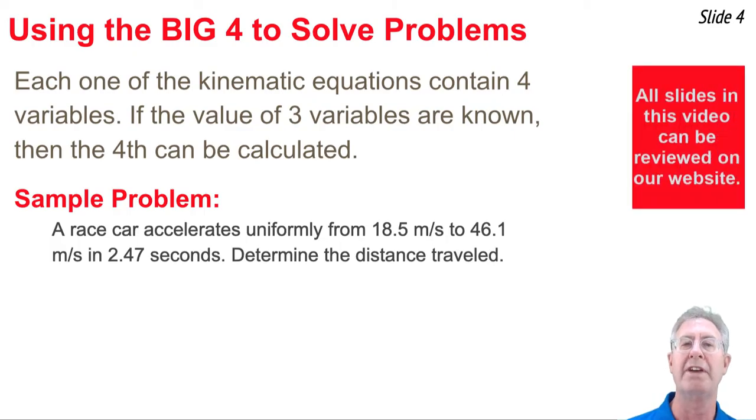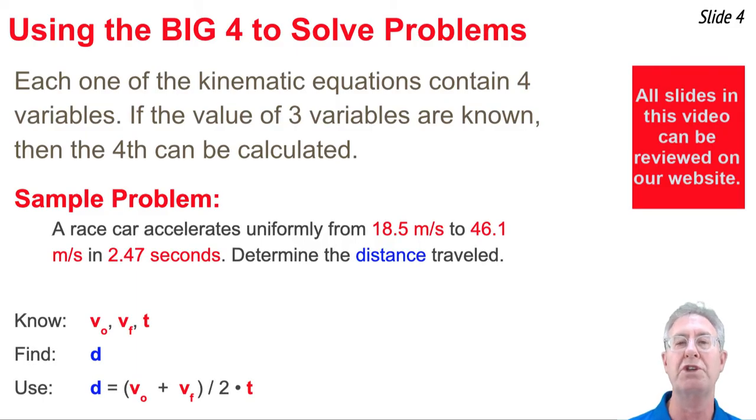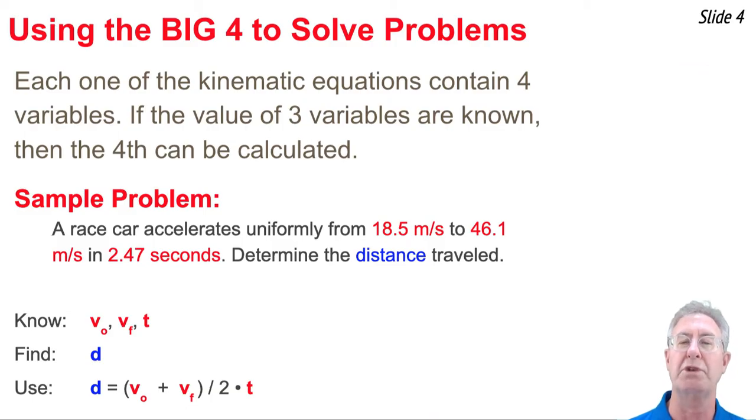For instance, I see that there's an 18.5 meter per second and a 46.1 meter per second. This is the original and the final velocity. And I also see that the time is 2.47 seconds. So I'll write down what I know. I know v original, v final, and I know t. And what I'm looking for is the distance. So what I will do is scan through the different equations until I find the one equation that contains these four variables, then I will substitute known values in and solve for the unknown. And that's the basic strategy that we will be using today as we look to solve problems using the big four.